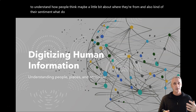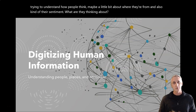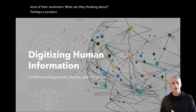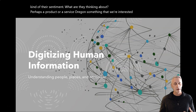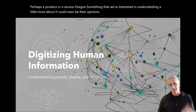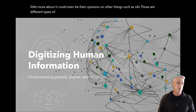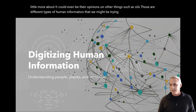What are they thinking about, perhaps, regarding a product or service or something that we're interested in understanding more about? It could even be their opinions on other things, such as polls. Those are different types of human information that we might be trying to gather. So let's take a look at the differences.